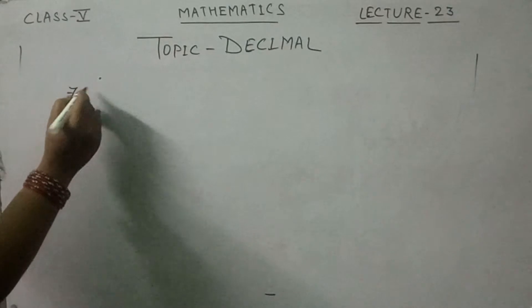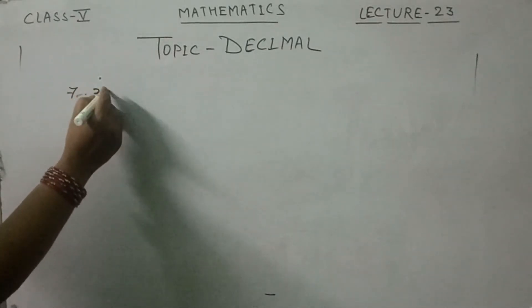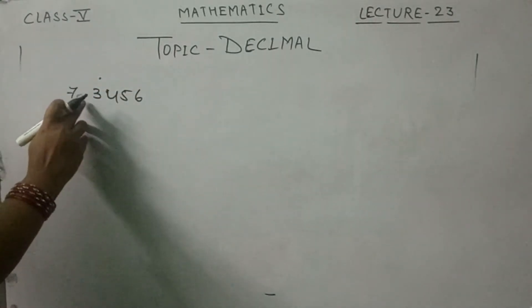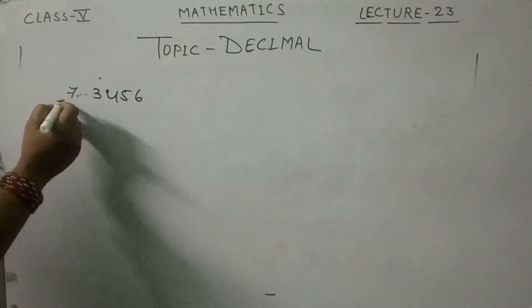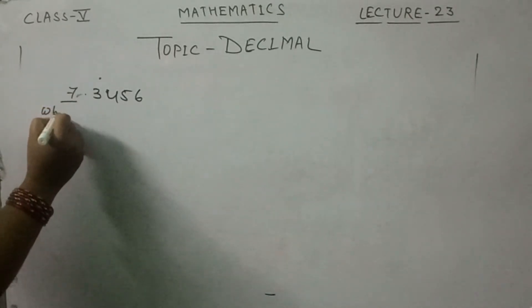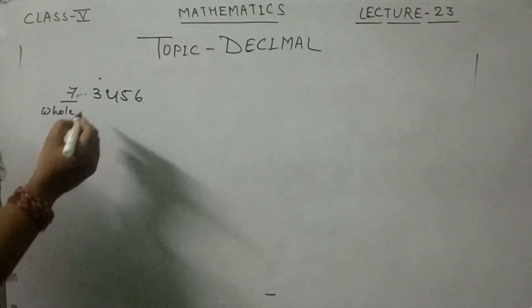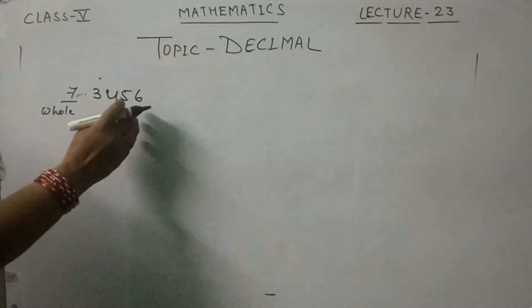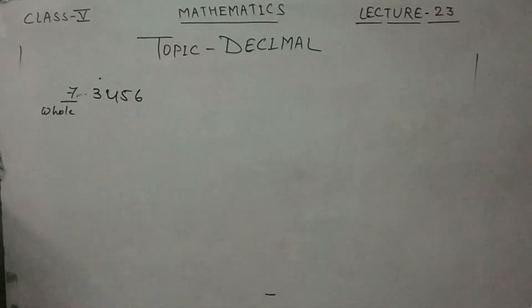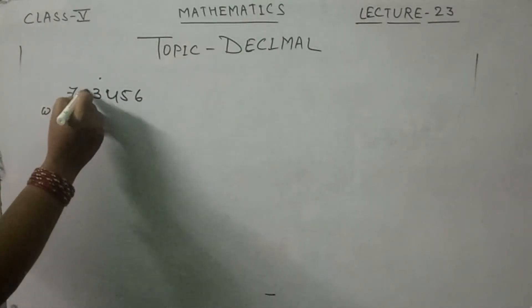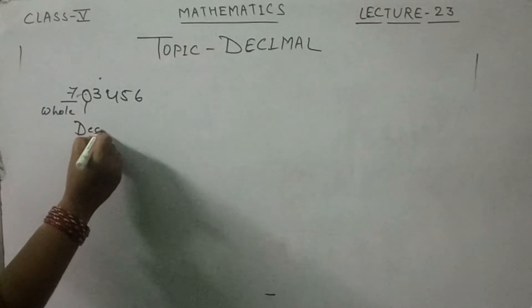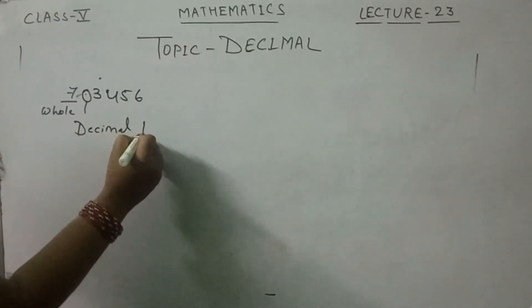For example, take 7.3456. Here we use a decimal point. Before the point, this number is the whole number. After the point is the fractional part of the number. The dot in a decimal number is called the decimal point.